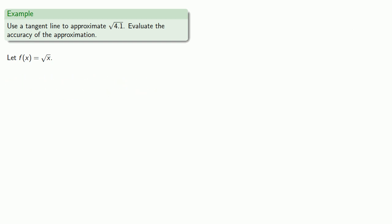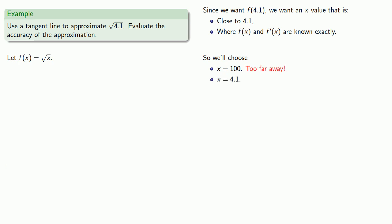Since we want f of 4.1, we want an x value that is close to 4.1, where f of x and f prime of x are known exactly. So let's choose, how about x equals 100? Well, that's a little too far away. How about x equals 4.1? Well, if we knew the value of f of 4.1, we wouldn't bother with the approximation. How about x equals 5? That would be good. That's close. But we don't know the value of f of 5, because that would be the square root of 5, and we don't know how to find that.